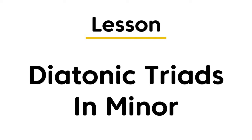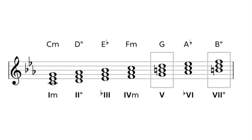In this lesson, we'll learn about diatonic triads in minor keys. Because there are natural, harmonic, and melodic minor scales, there are actually a lot of chord possibilities in minor keys. However, we'll be looking at the seven most common chords that you find.